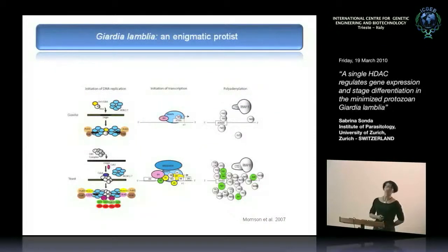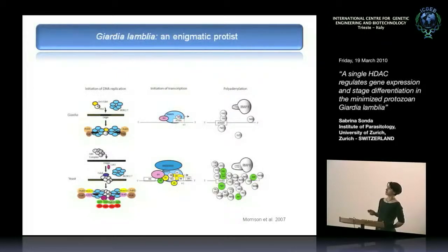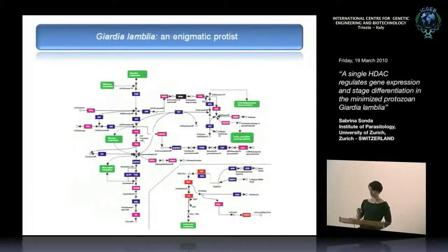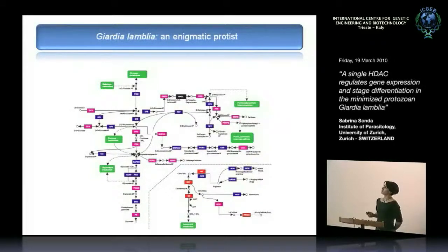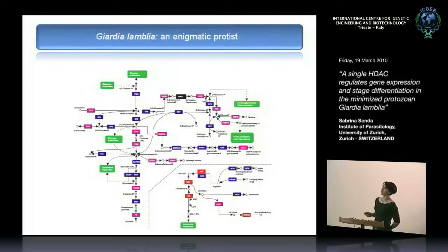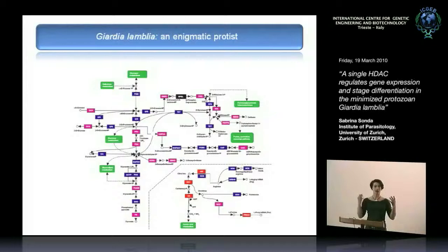Here are a couple of examples of these cellular simplifications. This is a comparison between Giardia and yeast, which have a similar genome size. For processes like DNA replication, transcription, and polyadenylation, you can visually see that the number of components in Giardia is much more reduced than in yeast. The metabolic pathways — glycogen metabolism, for example — are a patchwork of enzyme homologues: some from higher eukaryotes, some from archaea shown in red, some from bacteria in pink, and some in black with no homologues whatsoever. It's like Giardia wasn't really sure what to be.